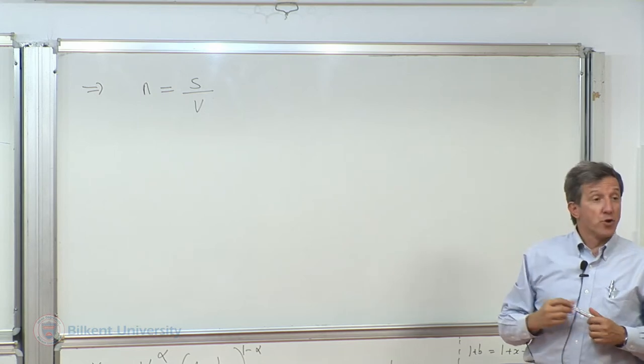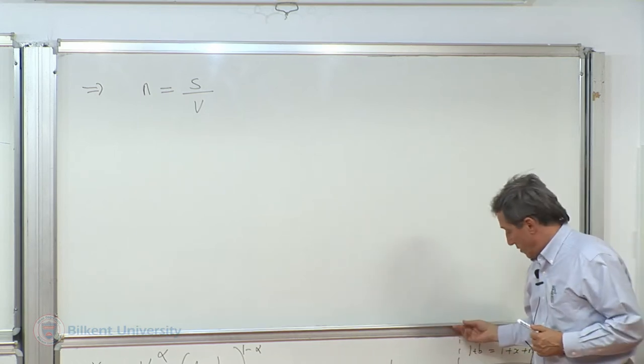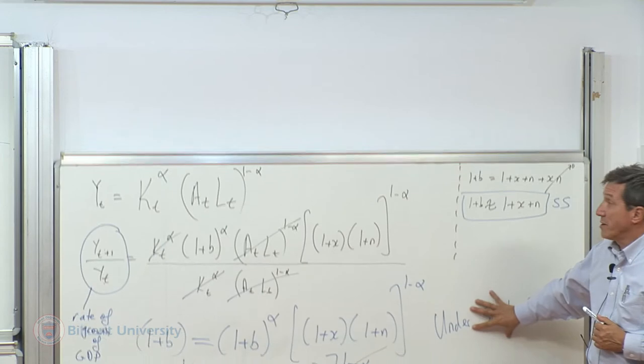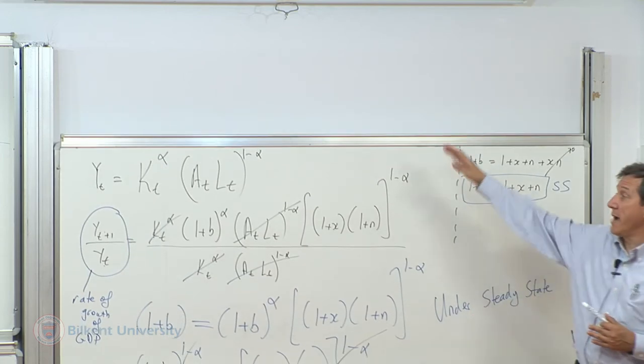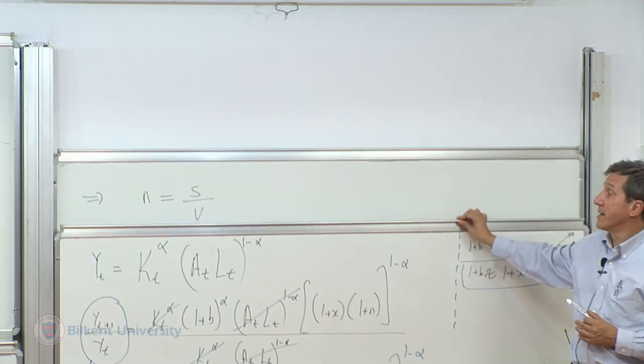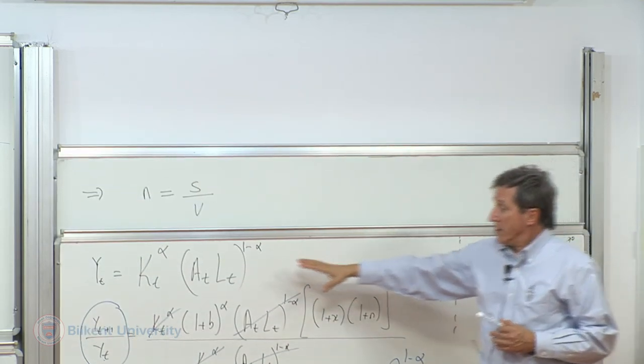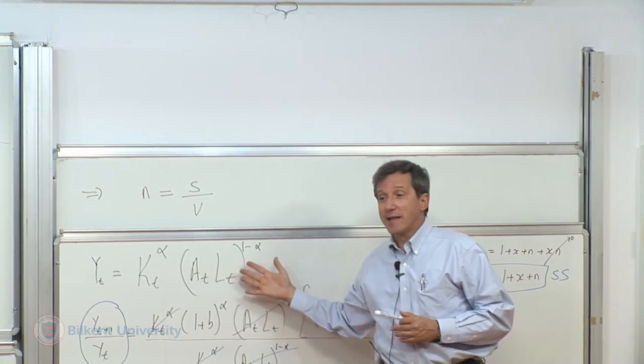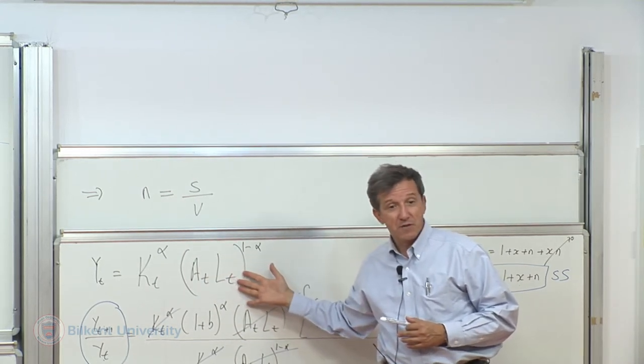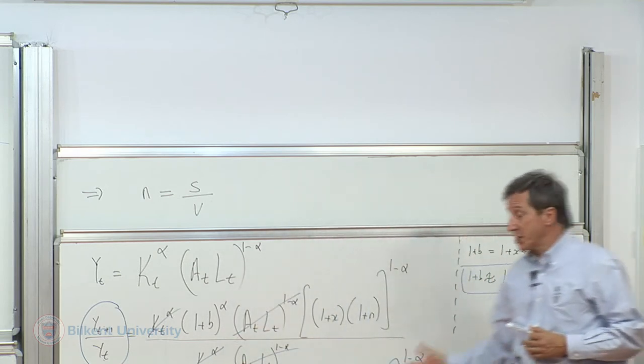This is the condition for steady state. That's how we came to this final relationship. From an illustration using a Cobb-Douglas type of production function, we have added a definition.